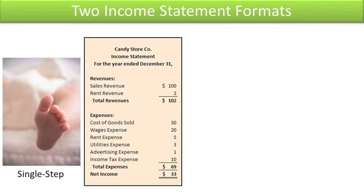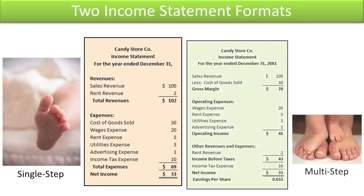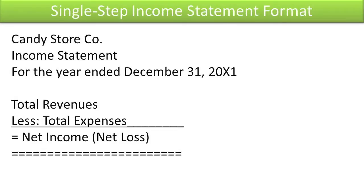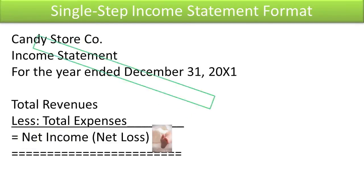This topic introduces two formats for the income statement: a single-step income statement and a multi-step income statement. Here is a simplified version of a single-step income statement. It is called a single-step income statement because net income is computed in one single step — total revenues less total expenses equals net income.